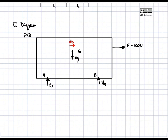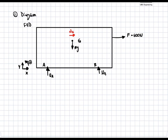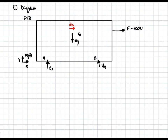Now that we have our free body diagram, we're going to write out the equations of motion for the body and solve them. There's only an x-component of acceleration because this is rolling, so there's no y acceleration. The coordinate system we're using: x is positive to the right, y is positive up, and rotation is positive counterclockwise. We'll start with the sum of forces in the x direction.